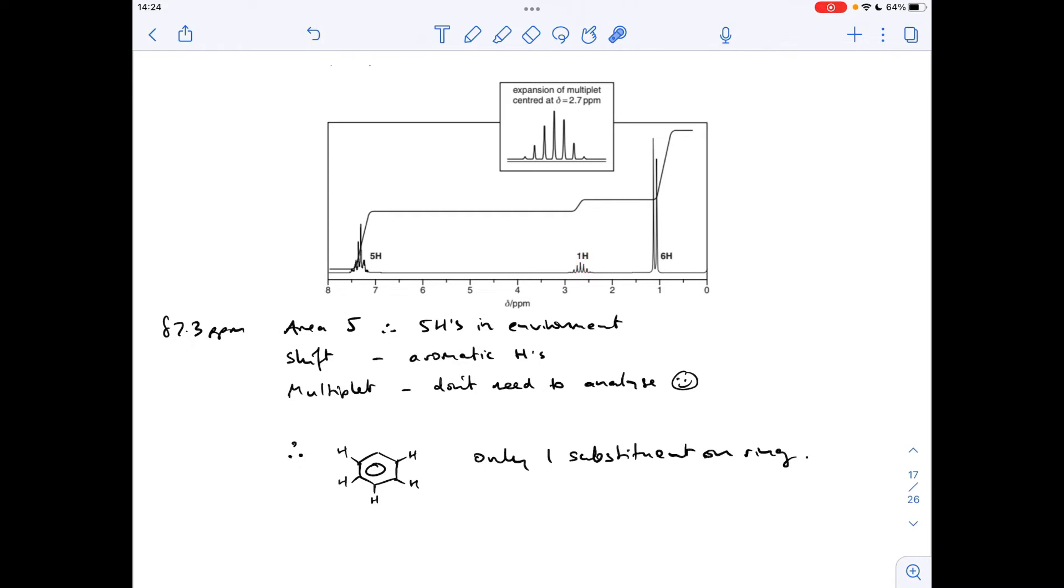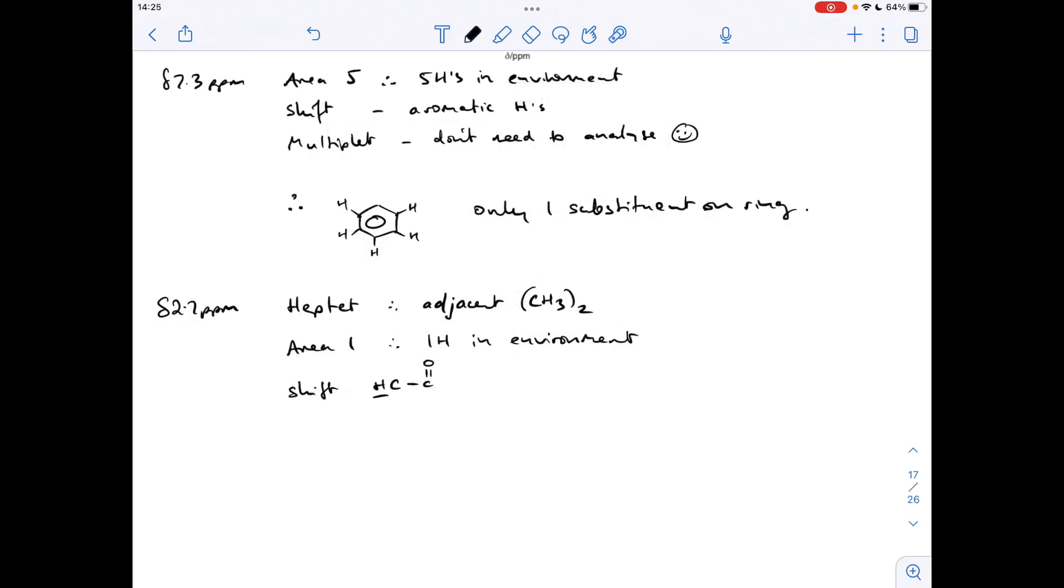The area of 1 means there's 1 hydrogen in the environment that causes this signal, and the shift value indicates an H to C to C double bond O. So if we think about what this is going to look like, we've got a single hydrogen bonded to a carbon bonded to a C double bond O.